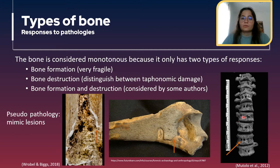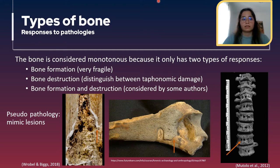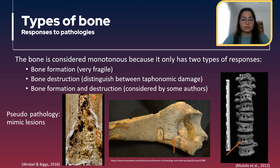When we talk about bone destruction, it's important to distinguish it from taphonomic damage. As taphonomic damage is made after the death of the individual, the bone is also dead, so the color of the margins is different from the rest of the bone. You can see here that this margin is clearer than the rest of the bone. With taphonomic destruction we also have pseudopathologies, which basically mimic lesions but aren't real lesions.